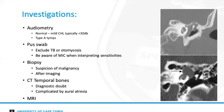Granular myringitis does not cause middle ear or mastoid opacification, any ossicular erosion, or any erosive changes within the temporal bone. An MRI is very infrequently required.